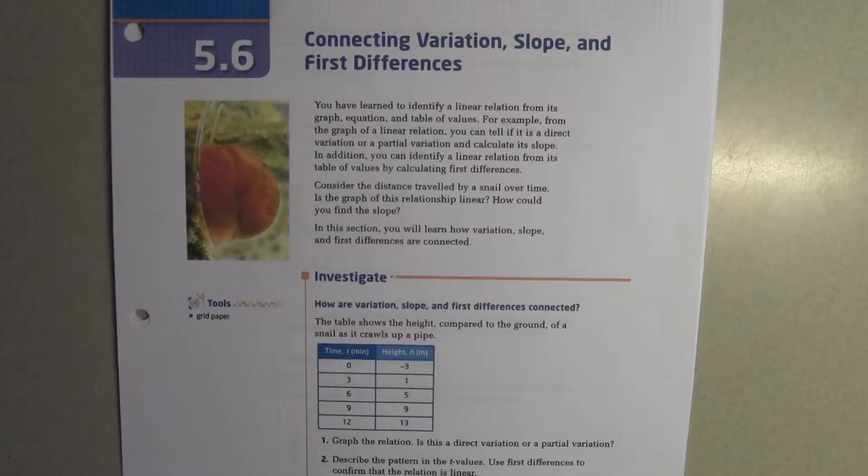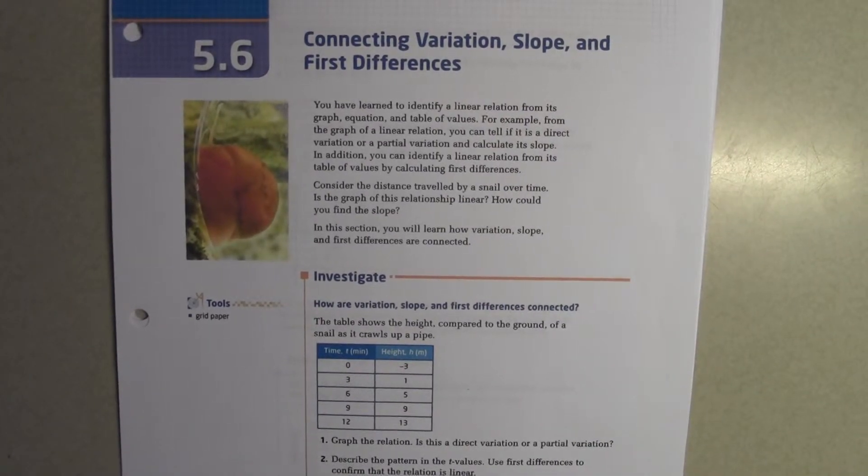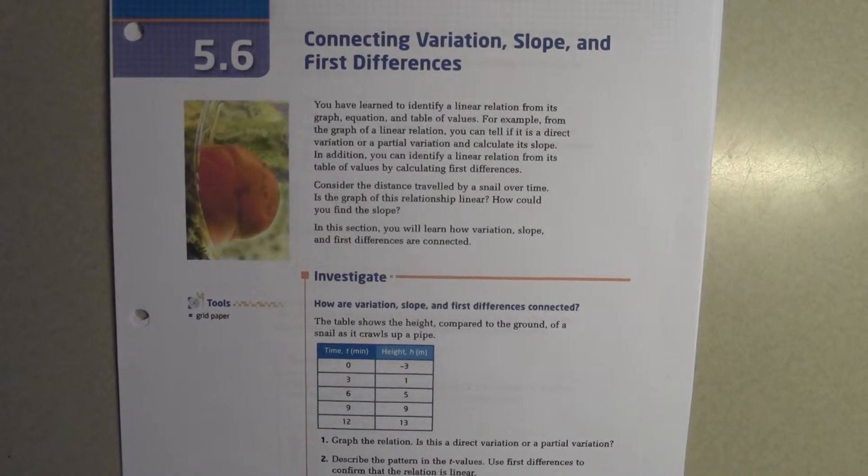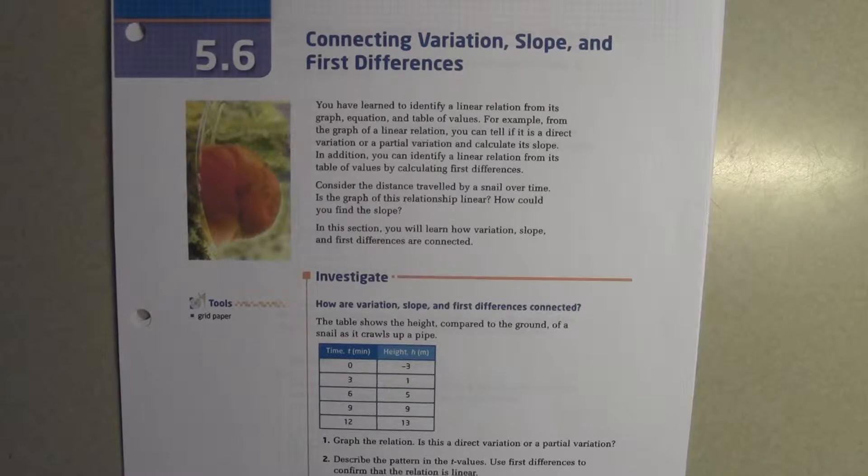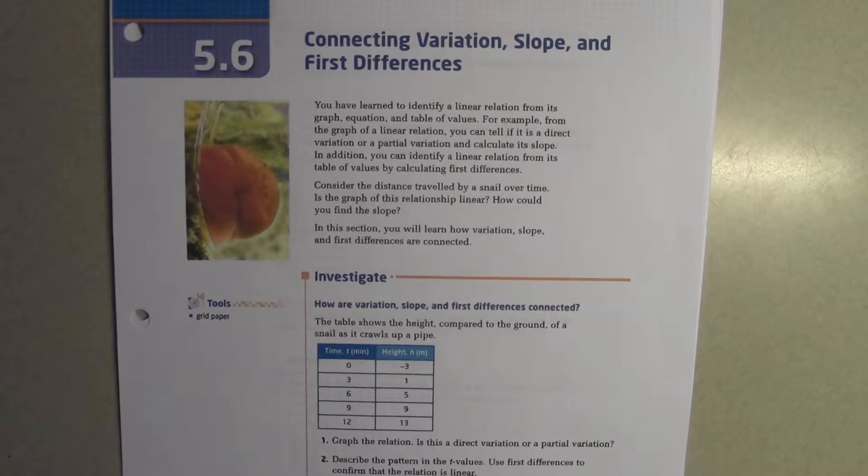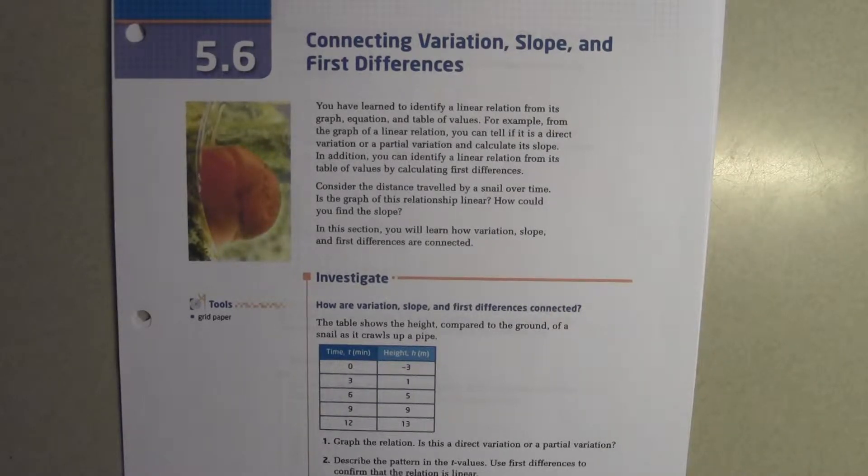This is 5.6. We're connecting variation, slope, and first differences. You have learned to identify a linear relation from its graph, equation, and table of values. For example, from the graph of a linear relation, you can tell if it's a direct variation or partial variation and calculate its slope. In addition, you can identify a linear relation from its table of values by calculating first differences.